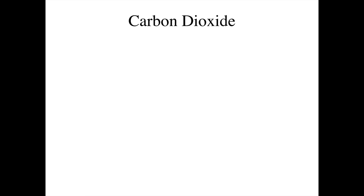Today we're going to talk about the carbonate system and how carbon dioxide, calcium carbonate, and the intermediate forms — carbonic acid, bicarbonate, and carbonate — all work together to control the pH, total CO2, and alkalinity of aquatic systems.